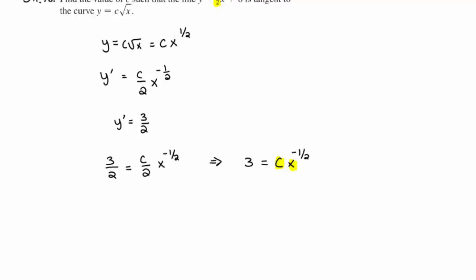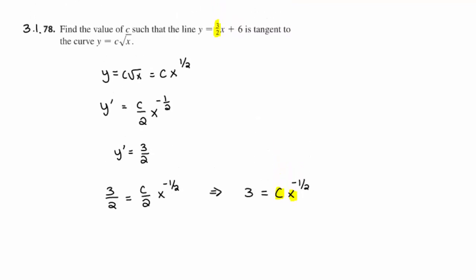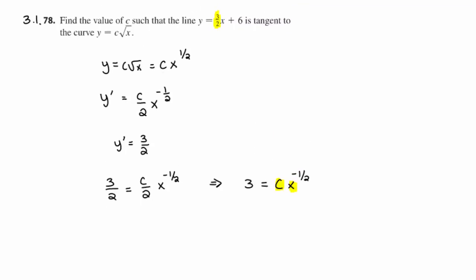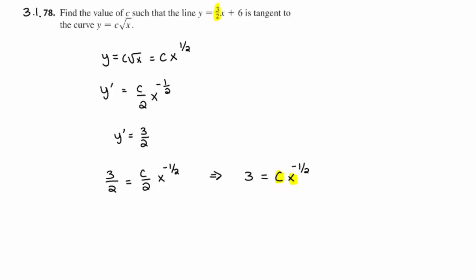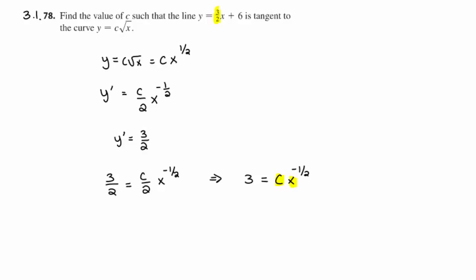To see how you're going to create that second equation, I'm going to go back up here to the equation of the line, which is y equals 3 halves x plus 6, and the equation of the curve, which is y equals c root x.